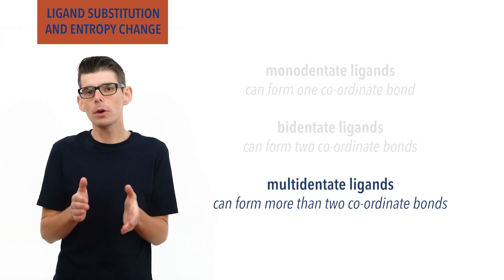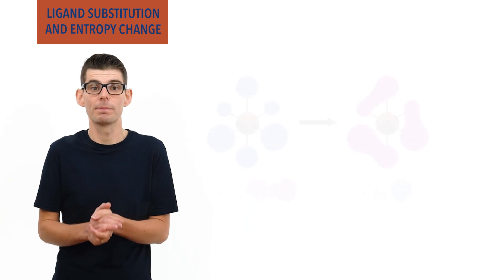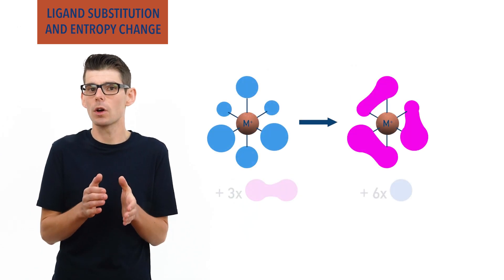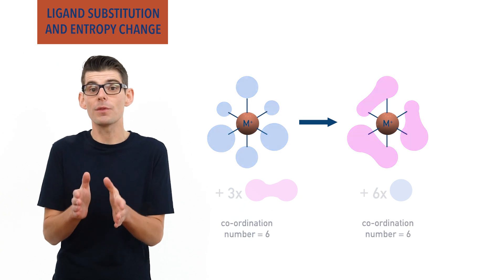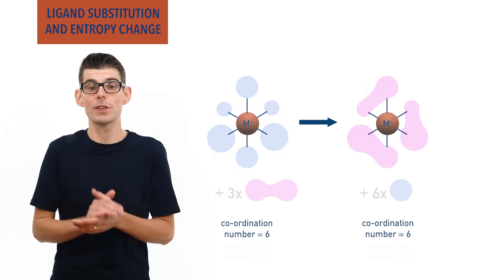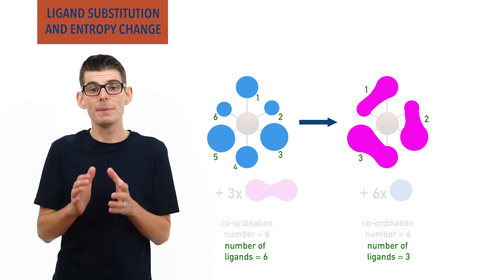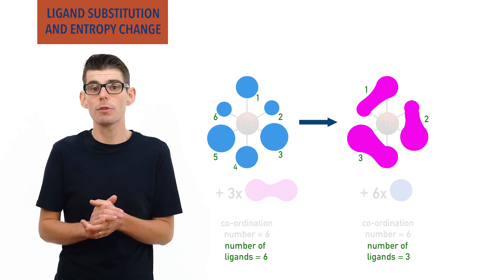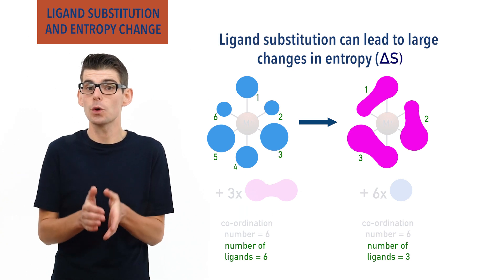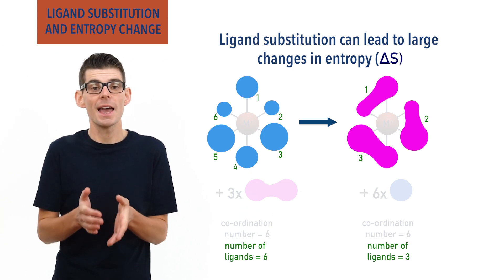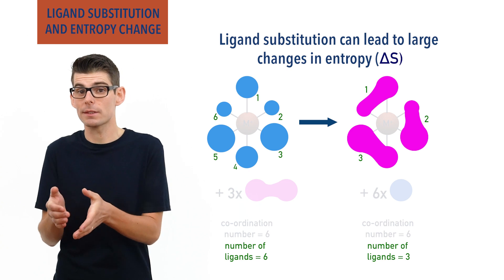When monodentate and bidentate ligands are substituted for each other, the coordination number of a complex ion may remain the same. However, the number of ligands changes. This change in the number of ligands means large entropy changes, delta S, can occur when bidentate or multidentate ligands end up being substituted into a complex ion.